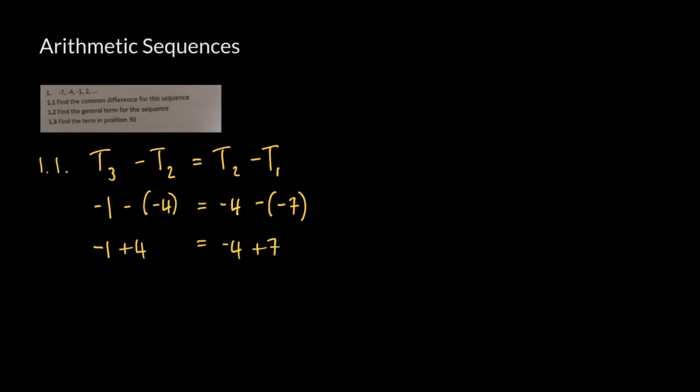So what we're going to get here is negative 1 plus 4 will give us 3, and on this side we'll also get 3. So the common difference we're looking for here, which is actually denoted d, is equal to 3.